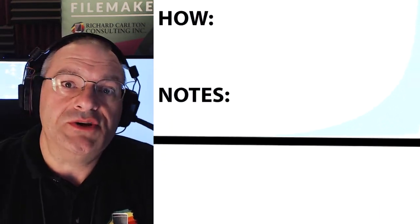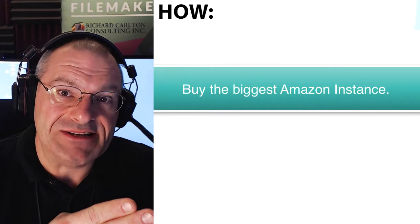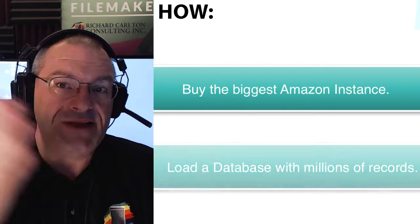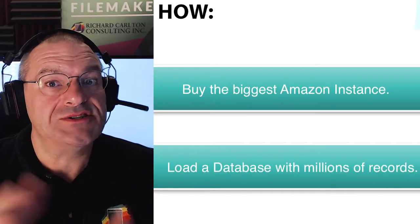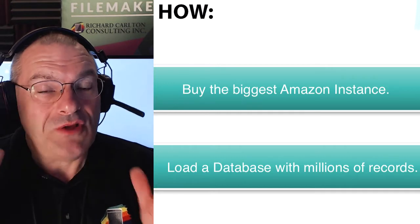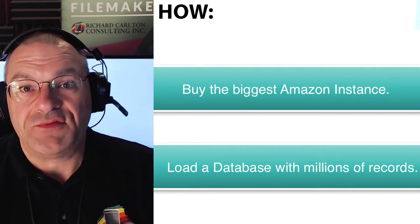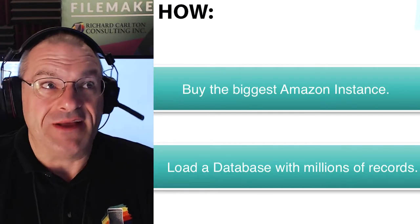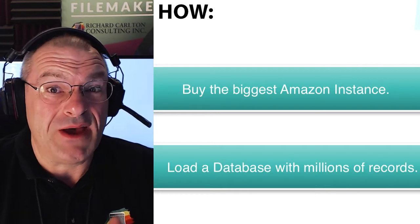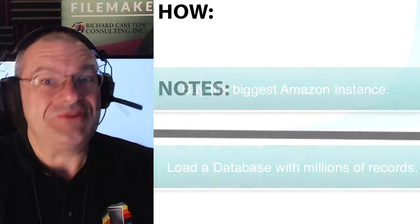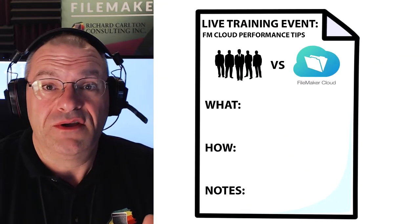What we're going to do is buy the very biggest Amazon instance that we can. We're going to load up a database with millions of records — not an empty database. We're talking about a real live CRM with millions of records. The database itself is like 15 or 16 gigabytes. It's huge. We're going to load this on FileMaker Cloud.